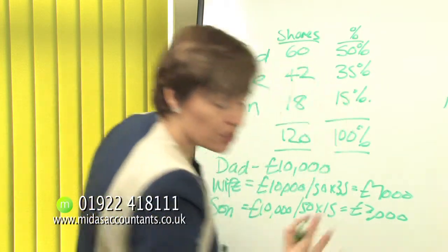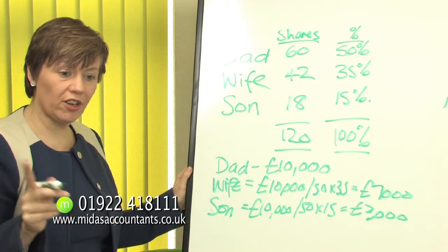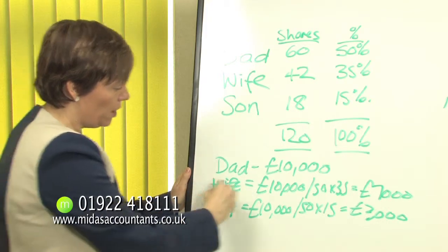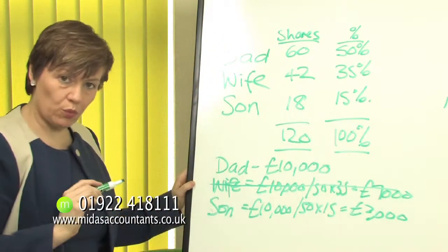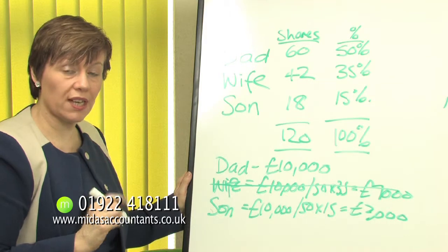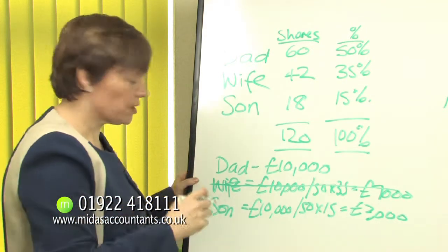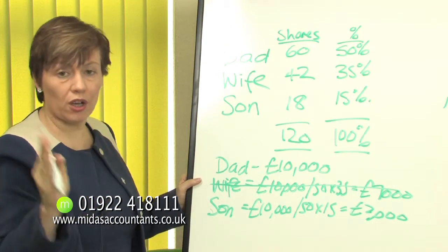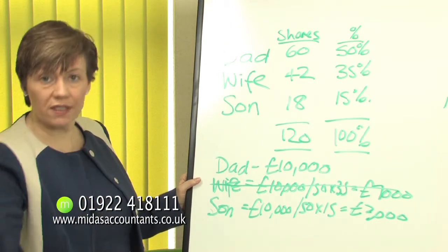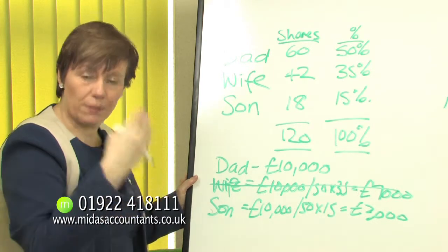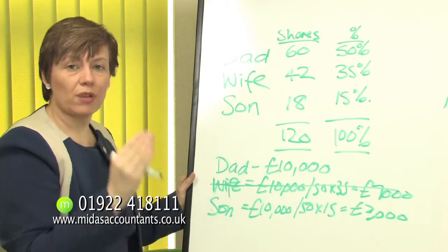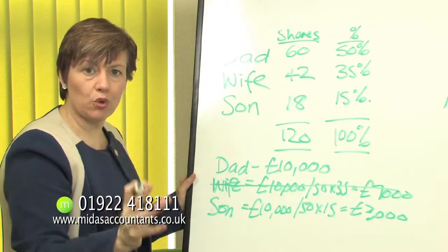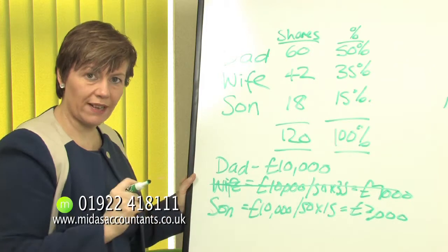Very occasionally in unusual circumstances somebody may decide they don't actually want their dividend. So the wife might decide she doesn't want her £7,000 this time. What she can do is sign a waiver to say she doesn't want the dividend being paid to her. They must do it in advance — they can't do it in retrospect. Your accountant or Midas Accountants will be able to give you the relevant forms.